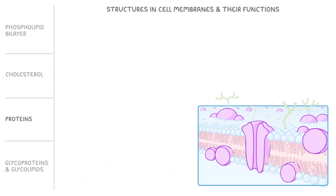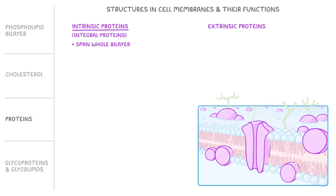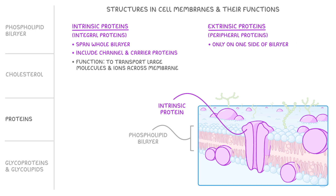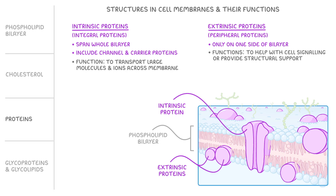Now let's look at the different proteins in the cell membrane, which fall into two main categories: intrinsic proteins and extrinsic proteins. Intrinsic proteins, also known as integral proteins, span the whole bilayer. They include channel and carrier proteins, and their function is to transport large molecules and ions across the membrane. Extrinsic proteins, sometimes called peripheral proteins, are only on one side of the bilayer, and their functions are to help with cell signalling or provide structural support.